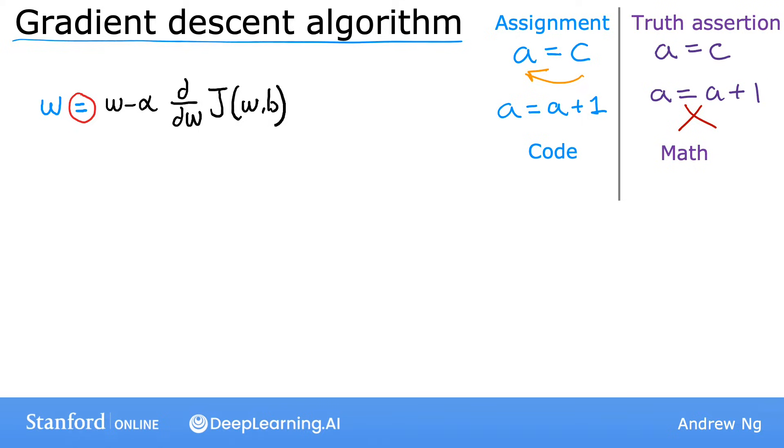So in Python and in other programming languages, truth assertions are sometimes written as equals equals. So you may see code that says a equals equals c, if you're testing whether a is equal to c. But in math notation, as we conventionally use it, the equal sign can be used for either assignment or for truth assertion. I'll try to make sure it's clear when I write an equal sign, whether we're assigning a value to a variable, or whether we're asserting the truth of the equality of two values.